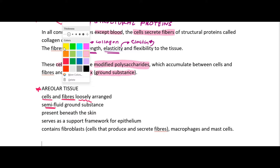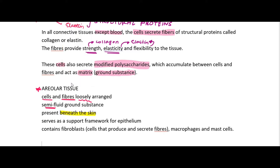Areolar tissue is present beneath the skin and serves as a support framework for the epithelium. Areolar tissue, like all connective tissue, contains cells. The first type of cells present in areolar tissue is fibroblasts — fibroblasts are cells that secrete or produce fibers. Breaking down the word: 'fibro' means fiber, and 'blast' in biology means to make or produce.